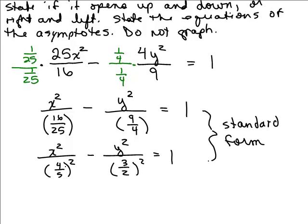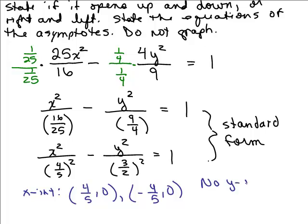All right, what else does it ask? So we wrote the equation in standard form. Second, state the intercepts. How are we going to get the intercepts? Well, in front of the x squared, it's positive when it was equal to 1. So we know that there are x-intercepts, not y-intercepts. So what are the x-intercepts? So the x-intercepts will be 4/5ths, 0 and negative 4/5ths, 0. And by the way, there's no y-intercepts, right? Just remember that.